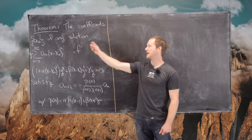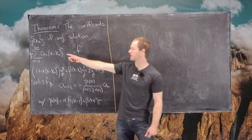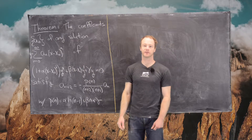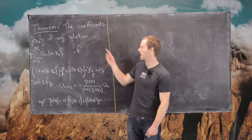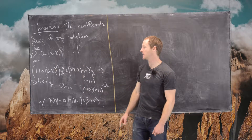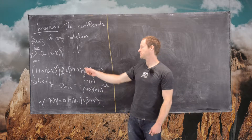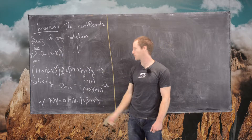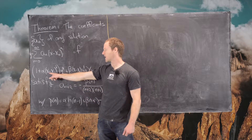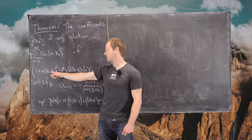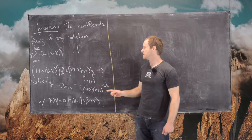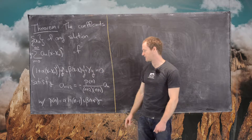The coefficients a_n of any solution — where y equals the sum of a_n times (x minus x₀)^n, a power series based at x₀ — of this differential equation: 1 plus α(x minus x₀)² times y'' plus β(x minus x₀) times y' plus γy equals 0. Notice that x₀ is an ordinary point because if we plug x₀ in, we get 1, not 0. These coefficients satisfy the following recursion.